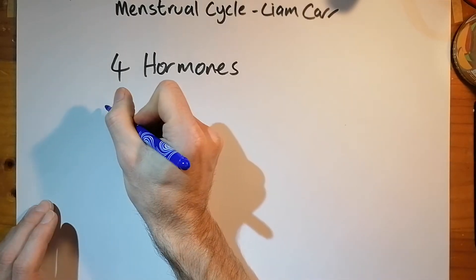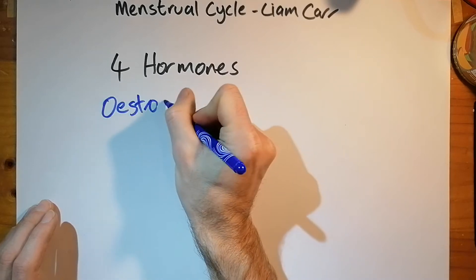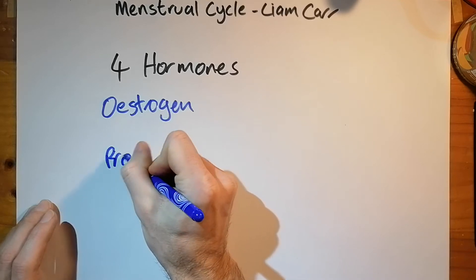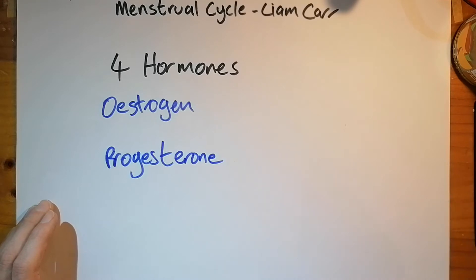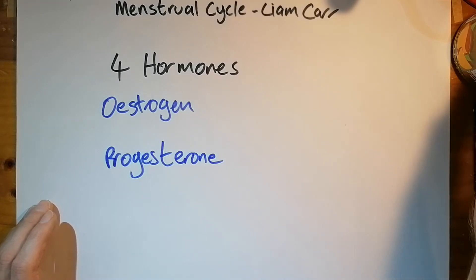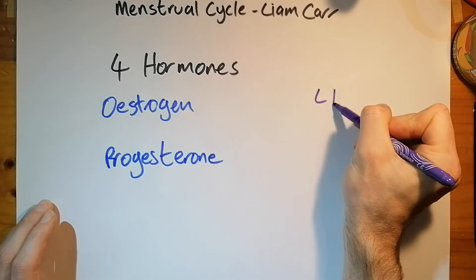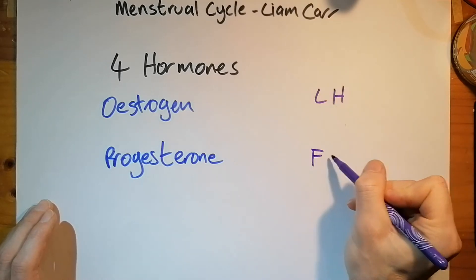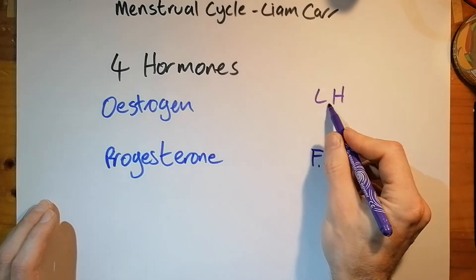And those four hormones are estrogen and progesterone, and also two other hormones called LH, which stands for luteinizing hormone, and FSH, which stands for follicle stimulating hormone.